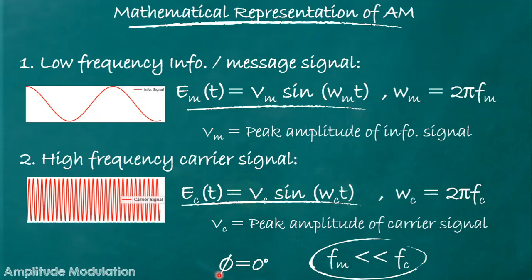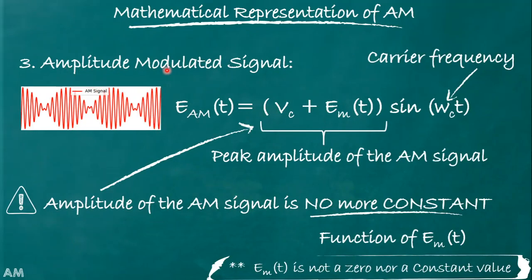In both cases we have considered the phase shift equal to 0 degrees, and we consider that fm is much less than fc, so the carrier frequency is much higher compared to the message signal frequency. Now let us represent the amplitude modulated signal. After modulation, the signal or carrier will look as shown, and this can be represented by the equation.